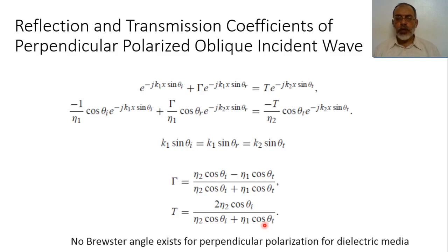It can be noted that the positions of cosine theta incident and cosine theta transmitted are interchanged compared to the parallel polarization case. In perpendicular polarization, we cannot find any angle of incidence such that gamma equals zero, meaning there is no Brewster angle for perpendicular polarization.